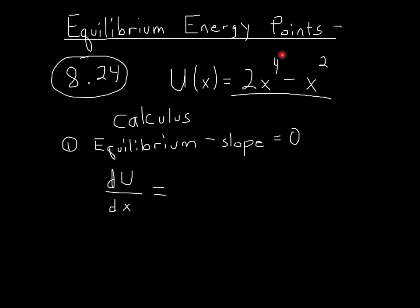I take my 4, bring it down, multiply it by my 2 — that gives me 8x. Then I have to take my 4 and subtract off 1; this is how the power rule works, giving me 8x cubed. I do the same process with my x squared to get my derivative equal to 2x. And I'm going to set this equal to 0, so I'm solving for where the slope on this graph is 0.